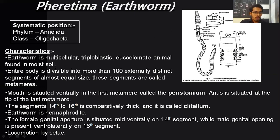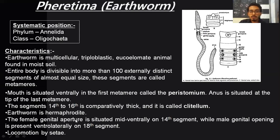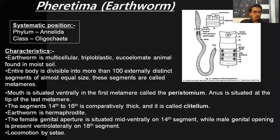Earthworms are hermaphrodite — they are bisexual, having both male and female gametes within them. The female genital aperture is situated mid-ventrally on the 14th segment, while the male genital opening is present ventro-laterally on the 18th segment. Locomotion in earthworm is by setae, which are ventrally present.